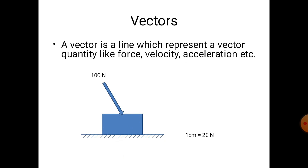Let us assume a scale of 1 cm equals to 20 N. Hence, in order to draw the vector showing 100 N force, we need to draw a line of 5 cm. This line must be drawn parallel to the direction of force, and vector AB represents the force of magnitude 100 N.